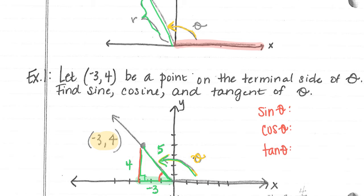Let's talk. Sine is opposite over hypotenuse, 4 over 5. Cosine is adjacent over hypotenuse, -3 over 5. And tan is opposite over adjacent, 4 over -3.